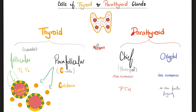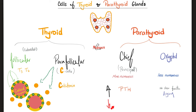A quick note on thyroid versus parathyroid. The thyroid has two types of cells: follicular and parafollicular. The follicular cells make T3 and T4 — thyroid hormone. The parafollicular cells — also called C cells because they are clear cells — secrete calcitonin. How about the parathyroid, which is parallel to the thyroid? The parathyroid glands have chief cells and oxyphil cells. The chief cells are the principal cells — they make parathyroid hormone. The parathyroid hormone wants to increase serum calcium, and it is also a phosphate-trashing hormone that decreases serum phosphate.